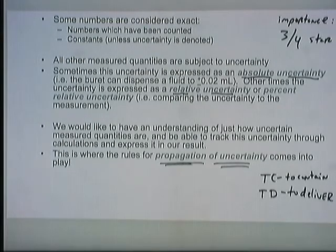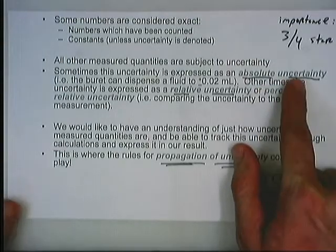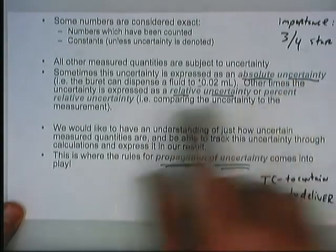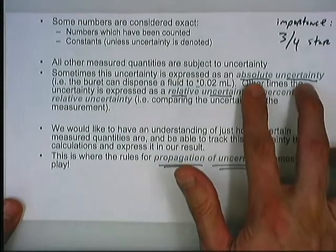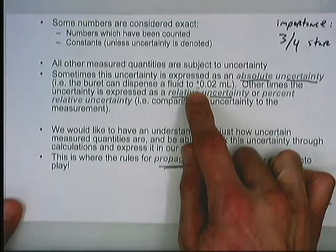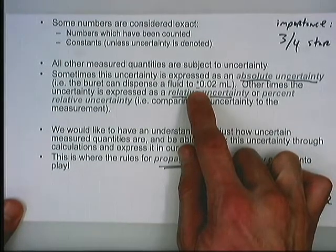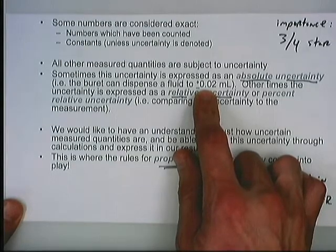All measured quantities are indeed subject to uncertainty. We can express this in a couple of different ways. We can call this an absolute uncertainty, or we might choose to call it a relative uncertainty, and they're not the same. In an absolute uncertainty, what's typical is a range of values around the measured value, and that value carries the same unit as the measurement.